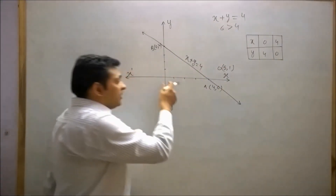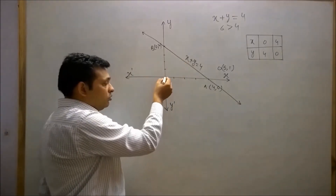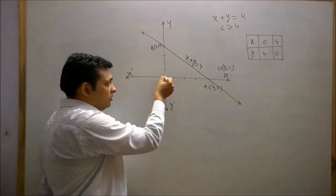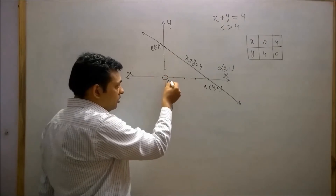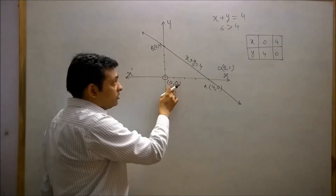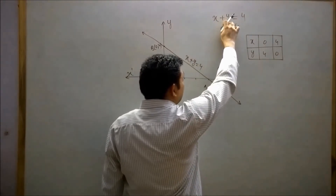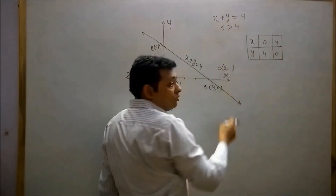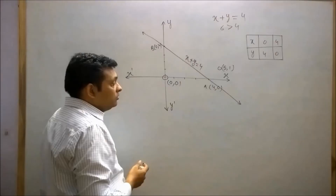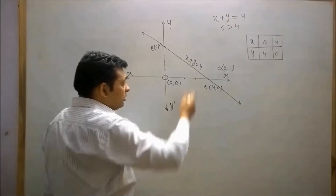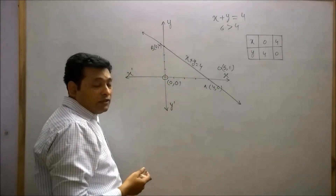Now pick any point to the other side of the line. Suppose I have chosen the point (0, 0). Put x equals to 0 and y equals to 0 in this equation: 0 plus 0 equals 0. Since 0 is always less than 4, all these points on this side make left hand side smaller than right hand side.